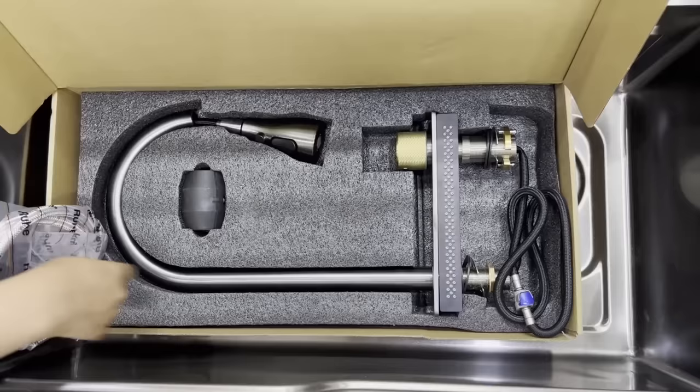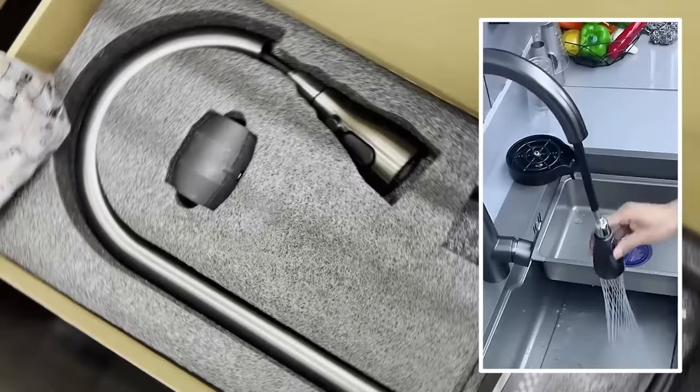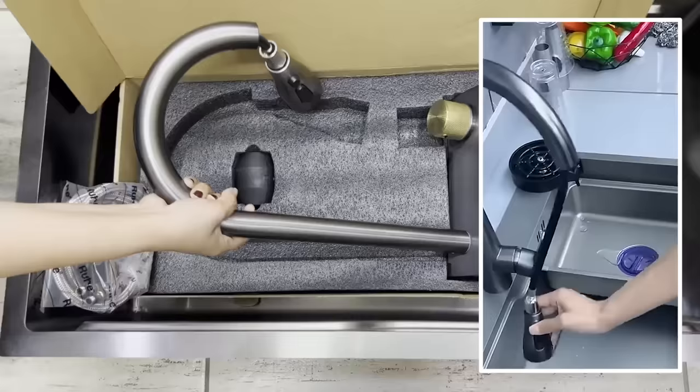There are two braided connection pipes for hot and cold water connection. Then you have your pull-out faucet made up of stainless steel with a triple flow function. There are three types of flows: foam flow, focus flow, and ring shower flow.